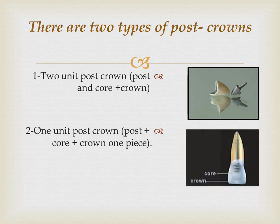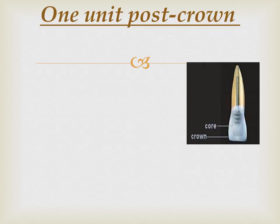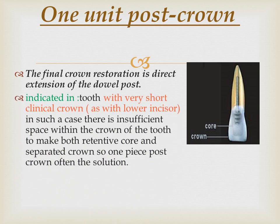The one-unit post crown is indicated in teeth with a very short clinical crown, such as lower incisors, because in such cases there is insufficient space within the crown of the tooth to make both a retentive core and a separate crown. So a one-piece post crown is often the solution.